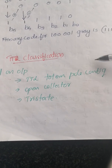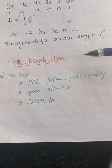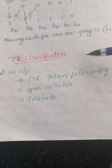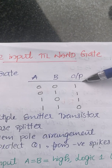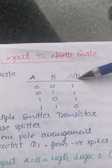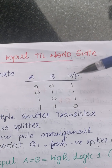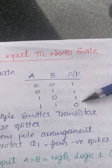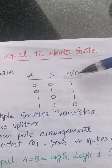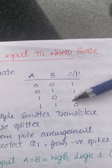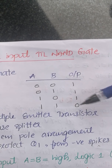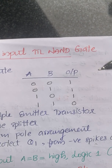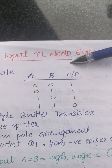First, the Totem Pole Configuration. We will explain this using a one-input TTL NAND gate. The NAND gate truth table shows it acts as an inverter. For input A·B = 1·1, the output is 0. The NAND gate output is the inverse of the AND operation.